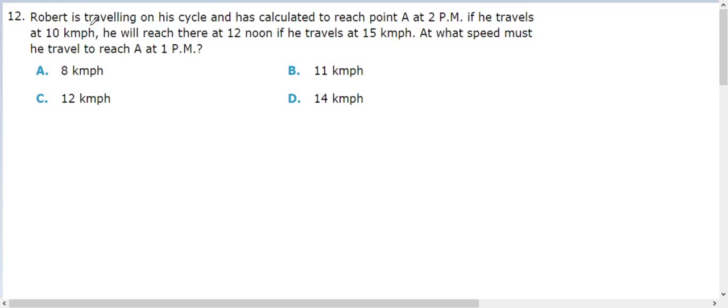Okay, a good question is: Robert is traveling on his cycle and has calculated to reach point A at 2 PM if he travels at 10 km per hour.